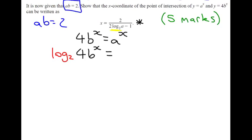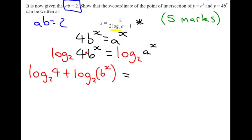So we get log to the base 2 of 4b to the power of x equals log to the base 2 of a to the power of x. Now you can use your log laws and you can think, when I've got log of something multiplied together, you can add the logs. So we get log to base 2 of 4 plus log to base 2 of b to the power of x. And if you remember another log law, when you've got a power in your log, you can actually bring the power to the front.